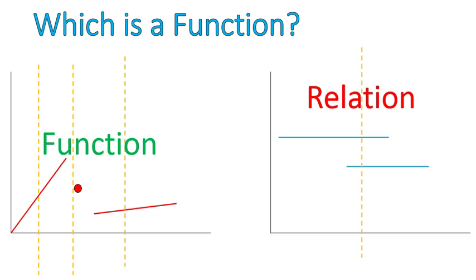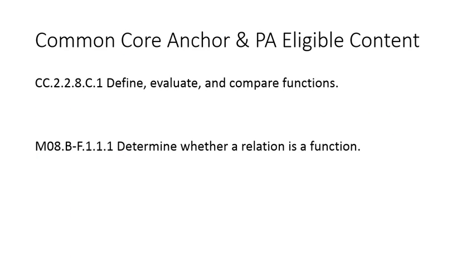I just wanted to explain that as well. So, what we've seen today is we've seen functions and relations. We've seen them in tables, in lists of ordered pairs, and in graphs. Those are usually the three ways that you see functions and you're asked if they are a function or if it's just a relation. Hope that lesson's been helpful for you. Here's your Common Core anchor and your PA eligible content. Have a wonderful day.